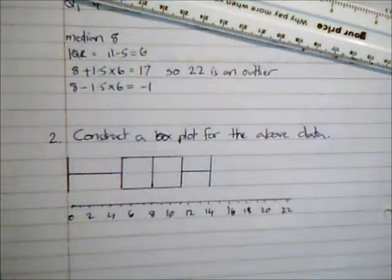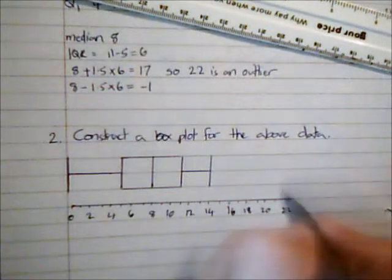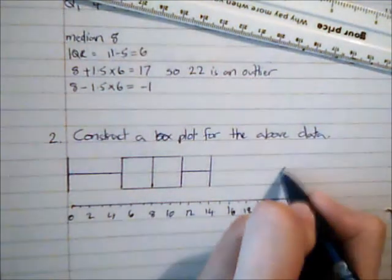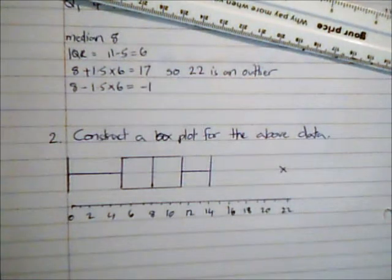And then the final thing I'm going to do is mark on any outliers with crosses. I've only got one outlier, which is at 22, and that is my completed box plot.